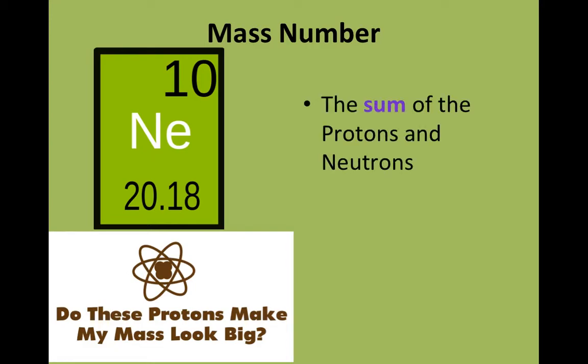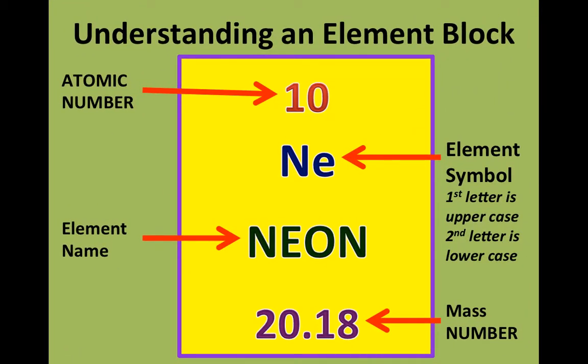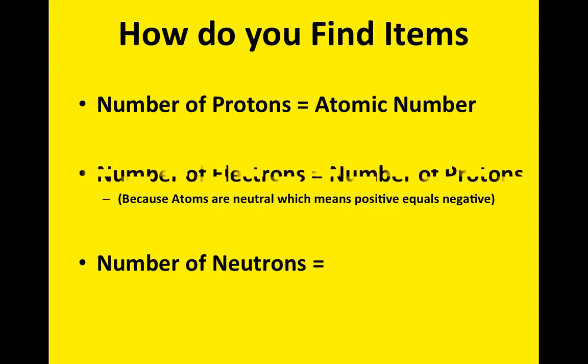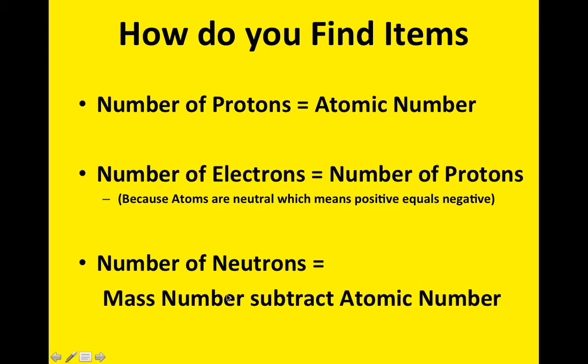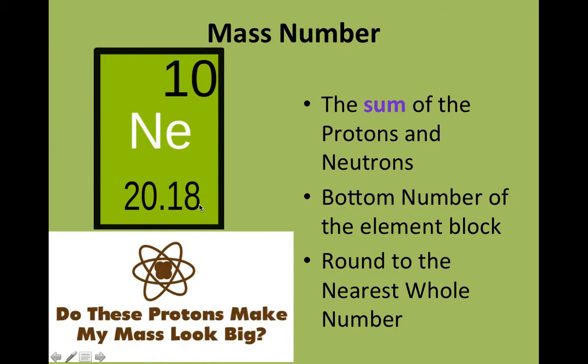Mass number is the number at the bottom. It's the sum of protons and neutrons, the stuff that's in that nucleus. To find it, the mass number is located at the bottom. So, neon, the mass number is 20.18, and that's how many protons and neutrons are located in there. We're going to round the bottom number to the nearest whole number. Then, to find the number of neutrons, we're going to take the mass number and subtract it from the atomic number. So, your mass number is the number on the bottom, and we're going to round it.